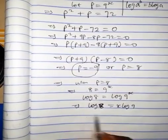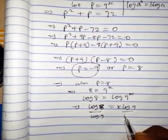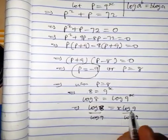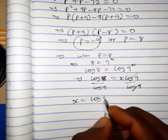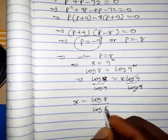Now we divide both sides by log 9. We have x on the left side equals log 8 over log 9.